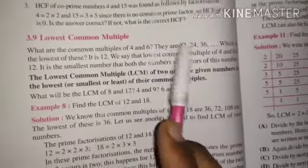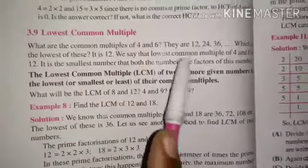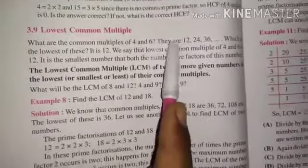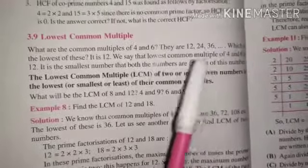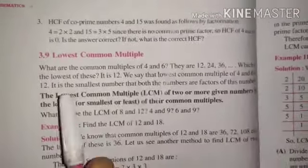The first one is 12, the next one is 24 and the next one is 36. You have taught common multiples of 4 and 6. The first one is our LCM. We can say which is the lowest of these?